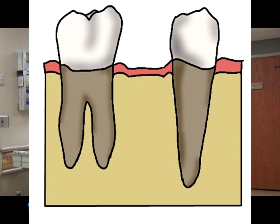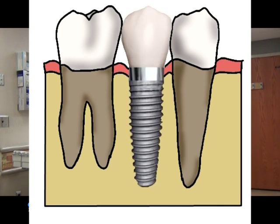The state-of-the-art treatment to replace a missing tooth is a dental implant. Implants are usually made from titanium and are anchored in the bone through a minor surgery. After everything has healed, a custom fitted crown is placed on the top of it.